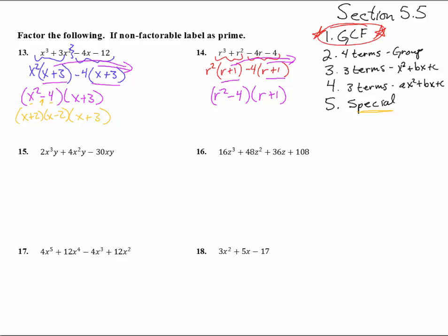Oh, look, just like number 13, we are left with, hey, look at that. That's a difference of a square and a square, which means this will break up into R plus 2, R minus 2, and R plus 1. There we go, number 14.